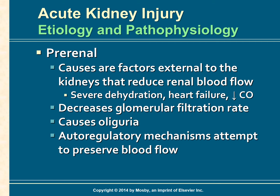Early AKI can often be reversed by correcting the blood volume, increasing the blood pressure, and improving cardiac output. With a decrease in circulating blood volume, the kidney compensates by constricting the renal blood vessels and activating auto-regulatory mechanisms — namely the renin-angiotensin-aldosterone mechanism and releasing antidiuretic hormone — which increases blood volume and improves kidney perfusion.